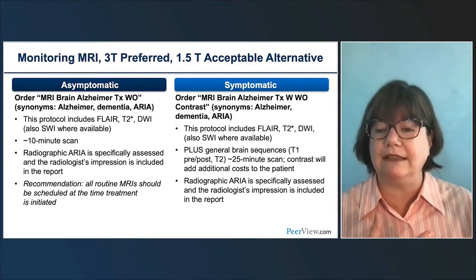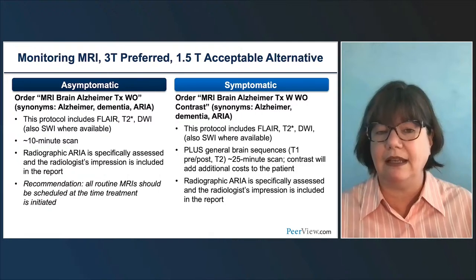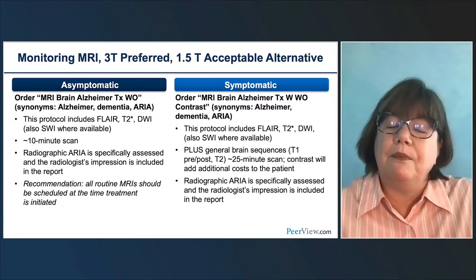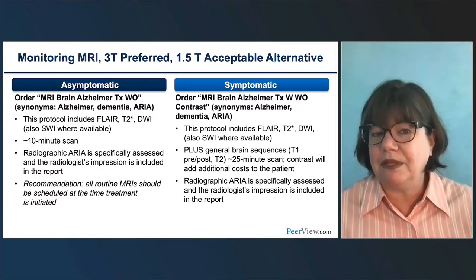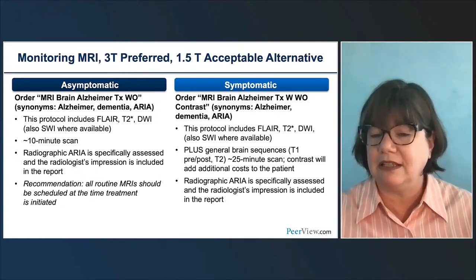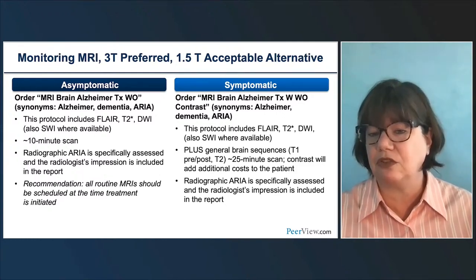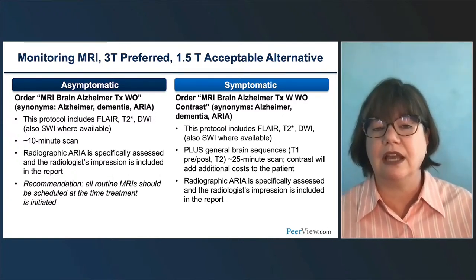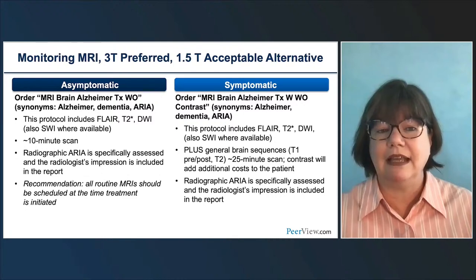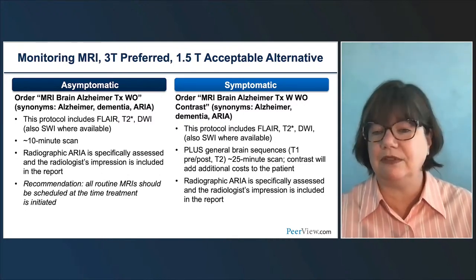If that patient is getting their infusion near their home, and you've identified a really good scanner in that area that happens to be 1.5T, and you can consistently get the same protocol on it, then that's perfectly acceptable — because what you're looking for on these scans is change from visit to visit. In our practice, if they're asymptomatic, we're looking for three findings: vasogenic edema on FLAIR, hemorrhages on T2* or SWI, and diffusion to rule out another process like an infarct. These three sequences take about 10 minutes.